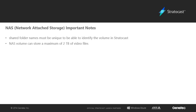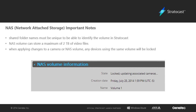Please note that a NAS volume can store a maximum of 2TB of video files. To avoid any conflicts when making changes to cameras using the same NAS volume, the video unit and NAS volume in use will be locked. All other cameras will have a state of locked updating associated devices, and the NAS volume will have a state of locked updating associated cameras.